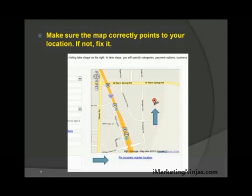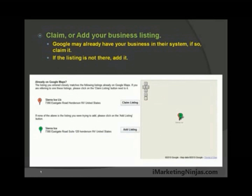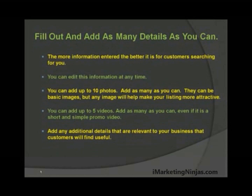Make sure the map correctly points to your location — if not, fix it. Google may already have your business in their system; if so, claim it. If the listing is not there, simply add it. Then add additional details about your business — fill out as many details as you can think of. The more information entered, the better it is for customers searching for you, and you can edit this information at any time.